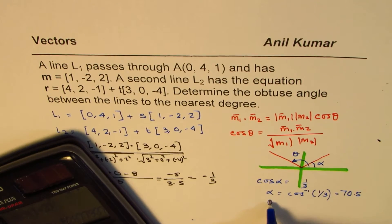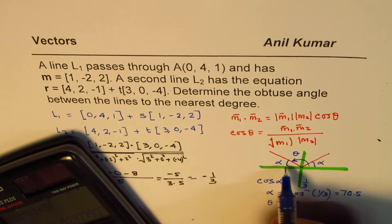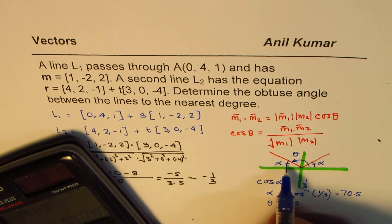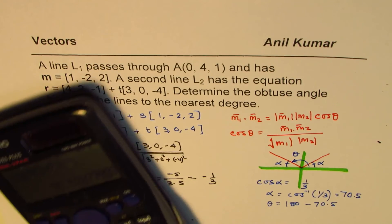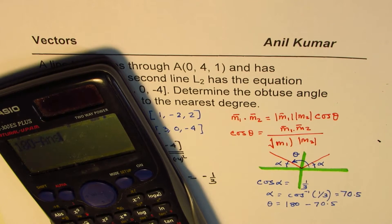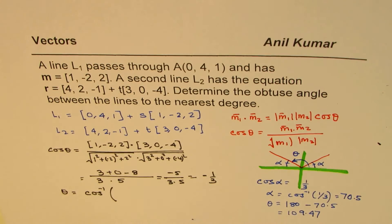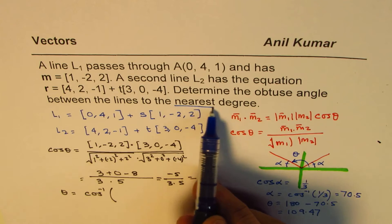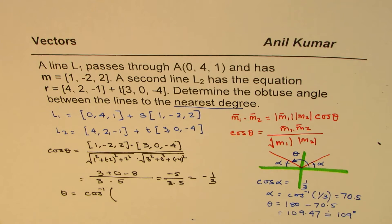Now angle theta is actually equals to 180 degrees because this is alpha. These two angles are equal. So now it is 180 minus 70.5. So let's do that. So it is 180 minus the answer, which is equals to 109.47. We need to round this answer to nearest degree. And therefore, we will round it to 109 degrees. So that is how we will do.